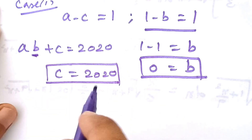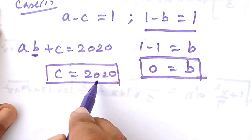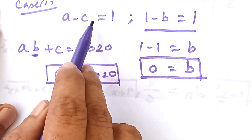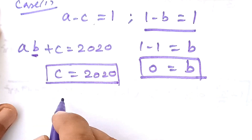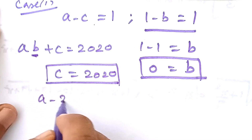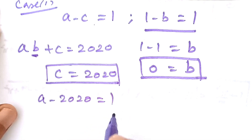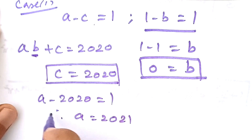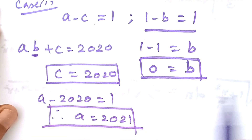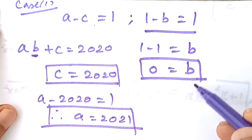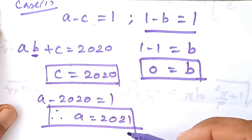Since C is 2020, substituting into A minus C equals 1 gives A minus 2020 equals 1, therefore A equals 2021. So in Case 1 the solution is: A equals 2021, B equals 0, and C equals 2020.